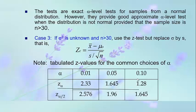For n greater than 30, this is the large-sample case. Case three: if the variance is unknown and the sample size is greater than 30, we use the z-test but replace sigma with s. That is, computed z equals x-bar minus mu divided by s over the square root of n. This gives the calculated z-values for common significance levels.